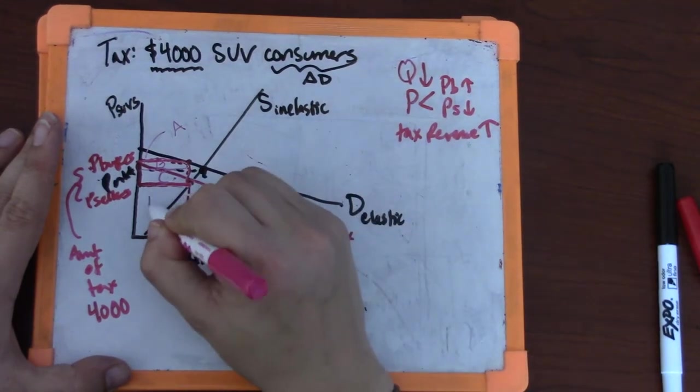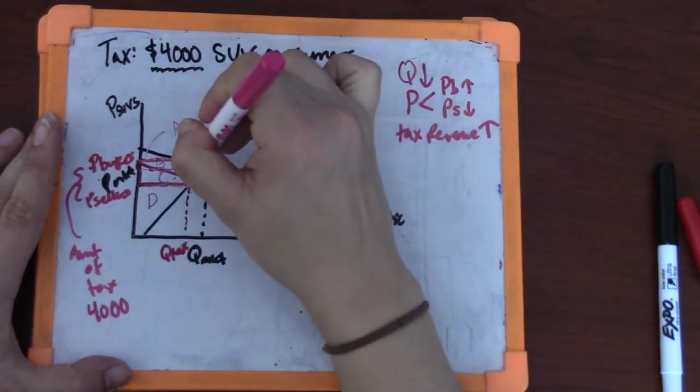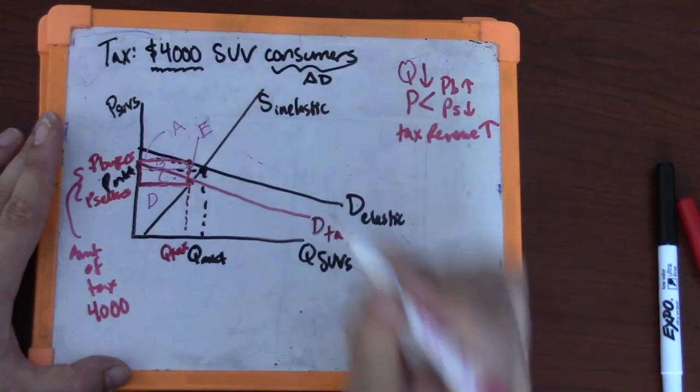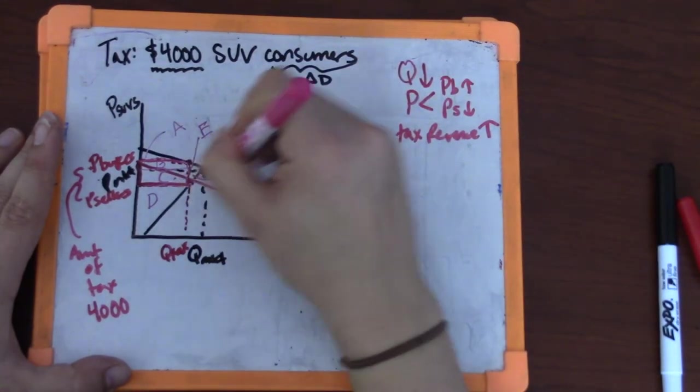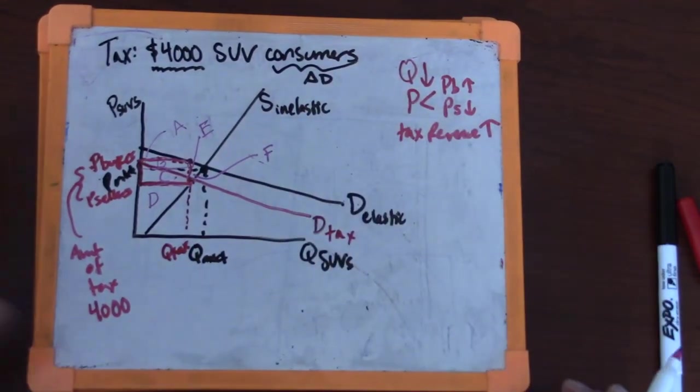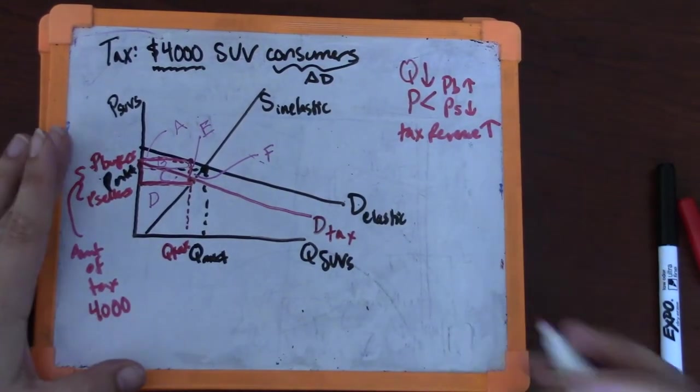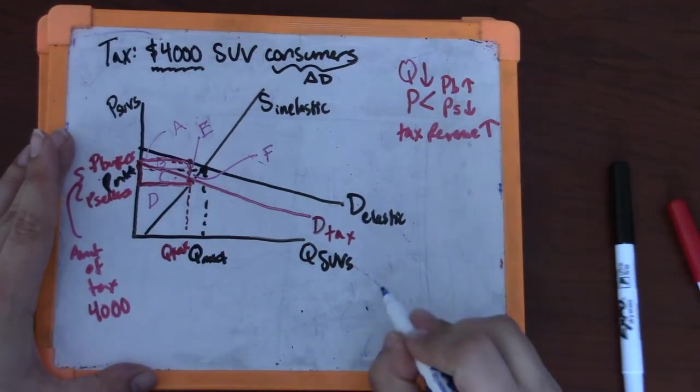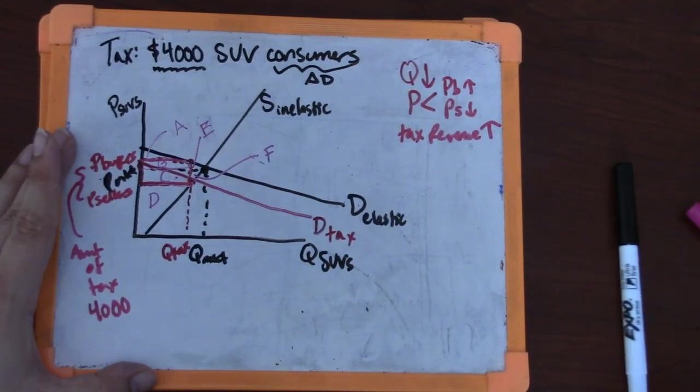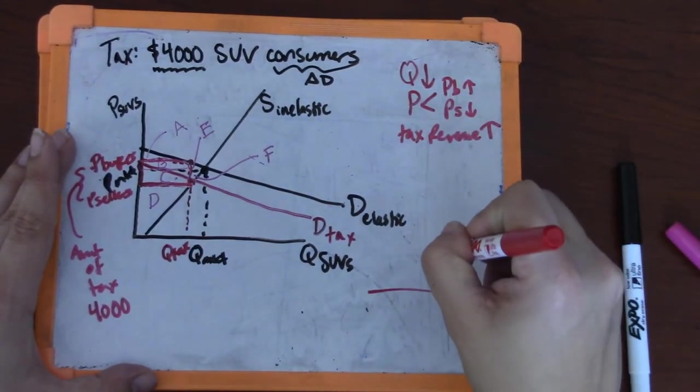All of our letters can straddle that red line. D and E is the top part of that little triangle there, and F is the bottom part of that little triangle there. Now we're going to compare what was happening at the market equilibrium and what is happening now that there's a tax.